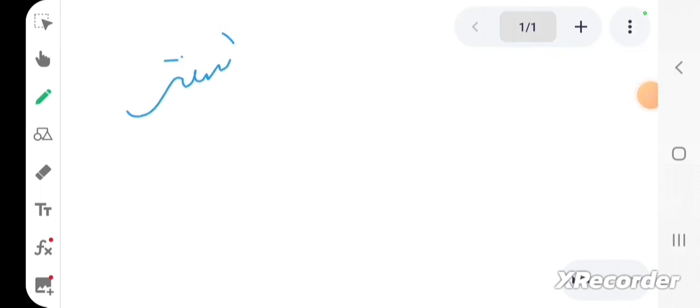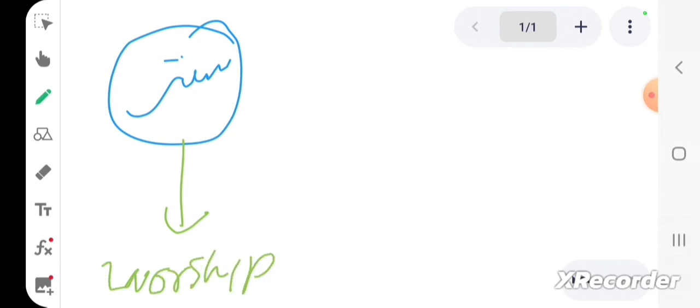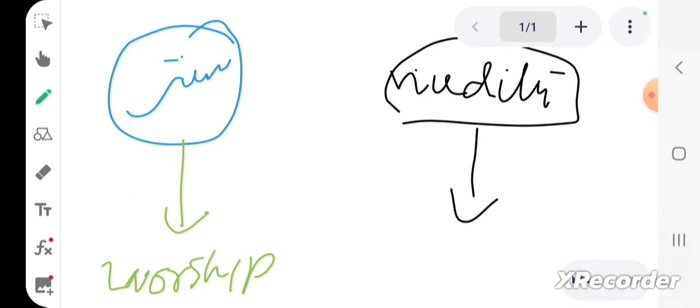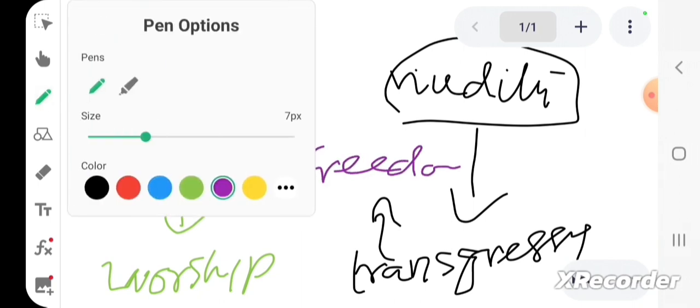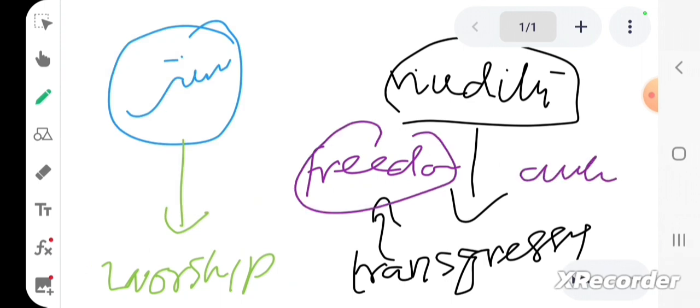Because satr comes with worshipping Allah subhanahu wa ta'ala, and nudity is the eventual result of transgressing against Allah subhanahu wa ta'ala. That's what freedom is and that's what autonomy is. And you see when Adam Alayhi Salaam and Hawa Alayhi Salaam...